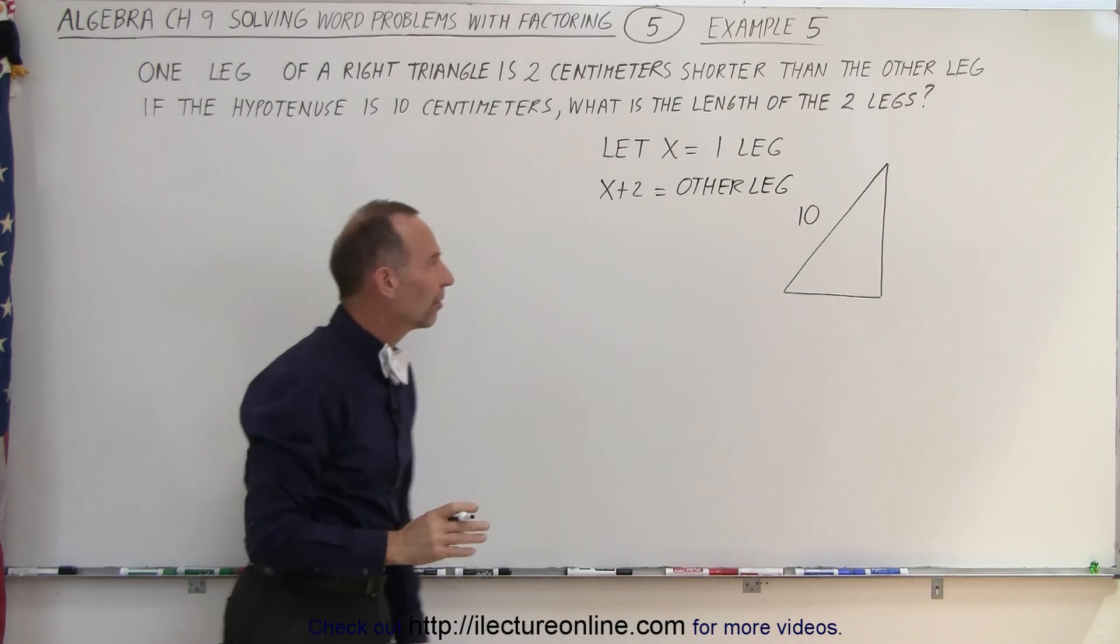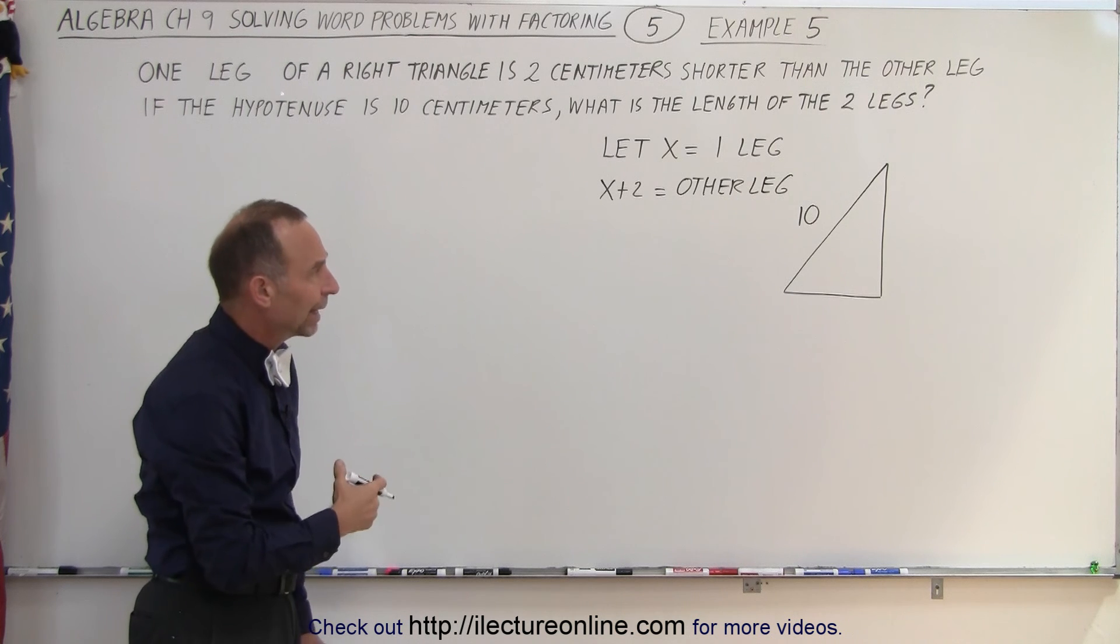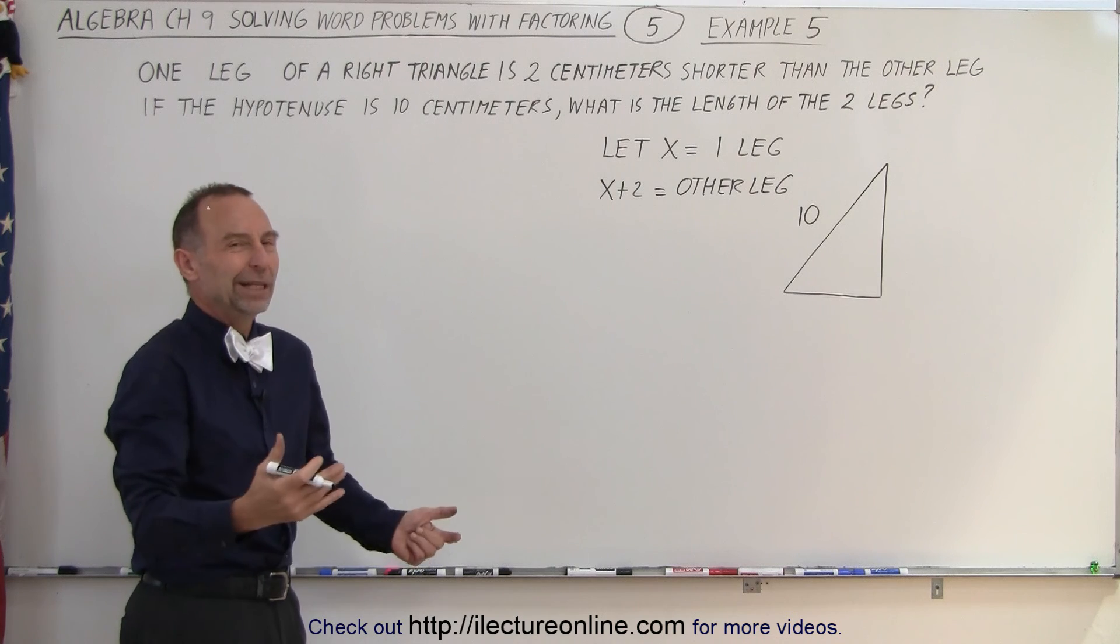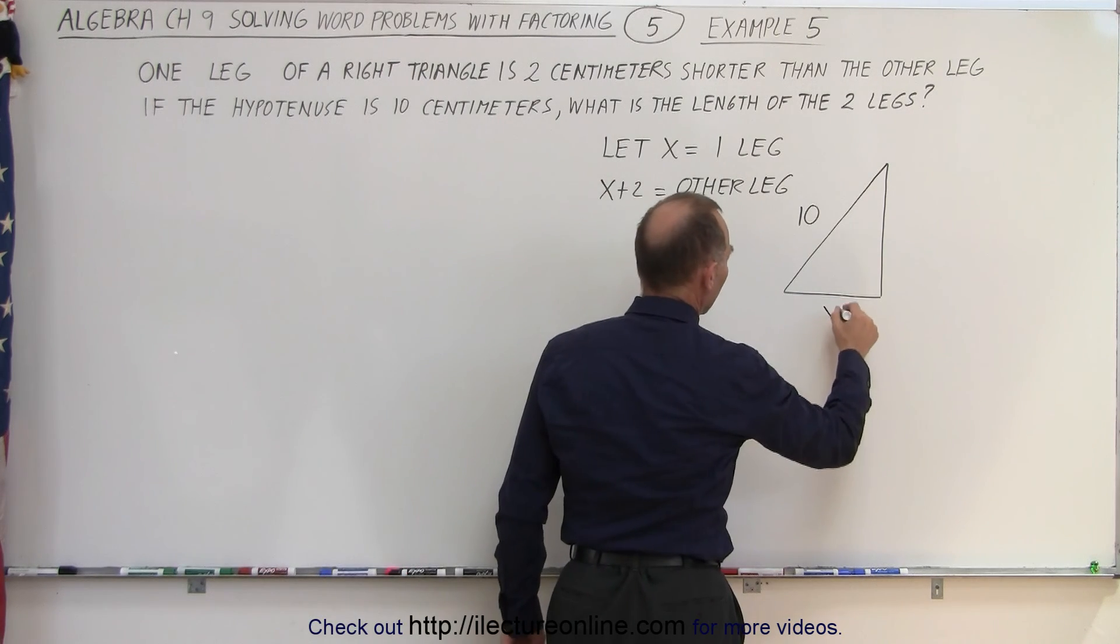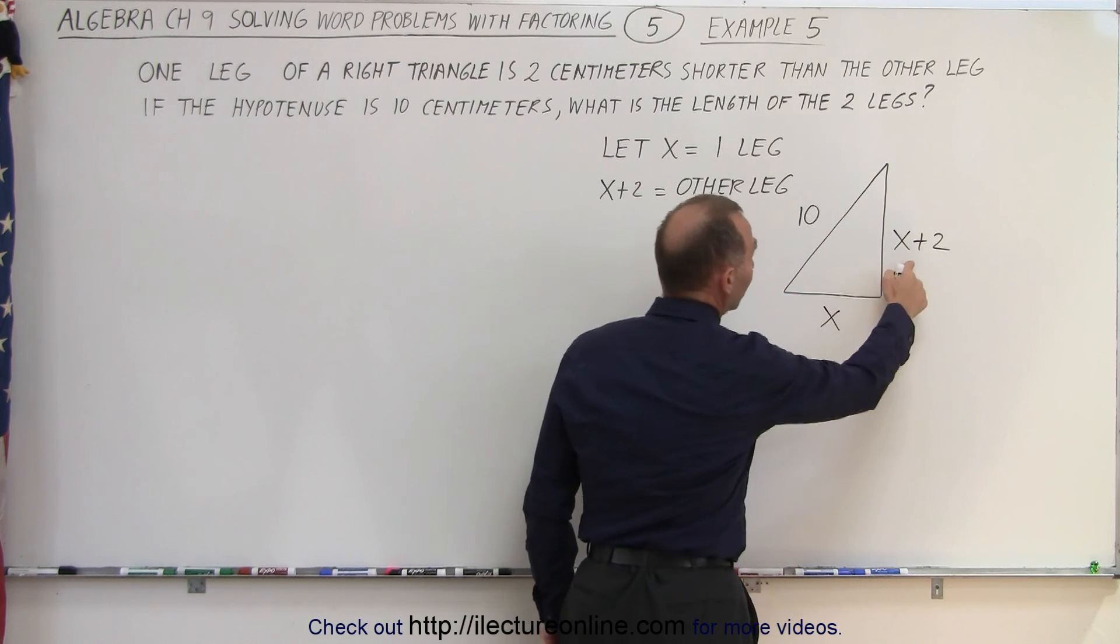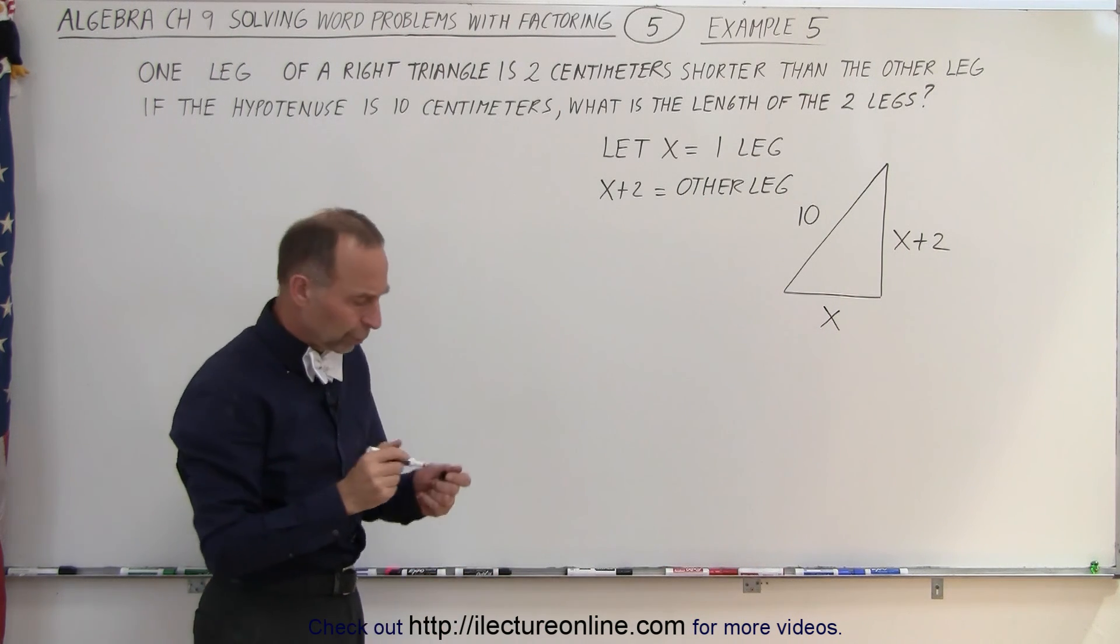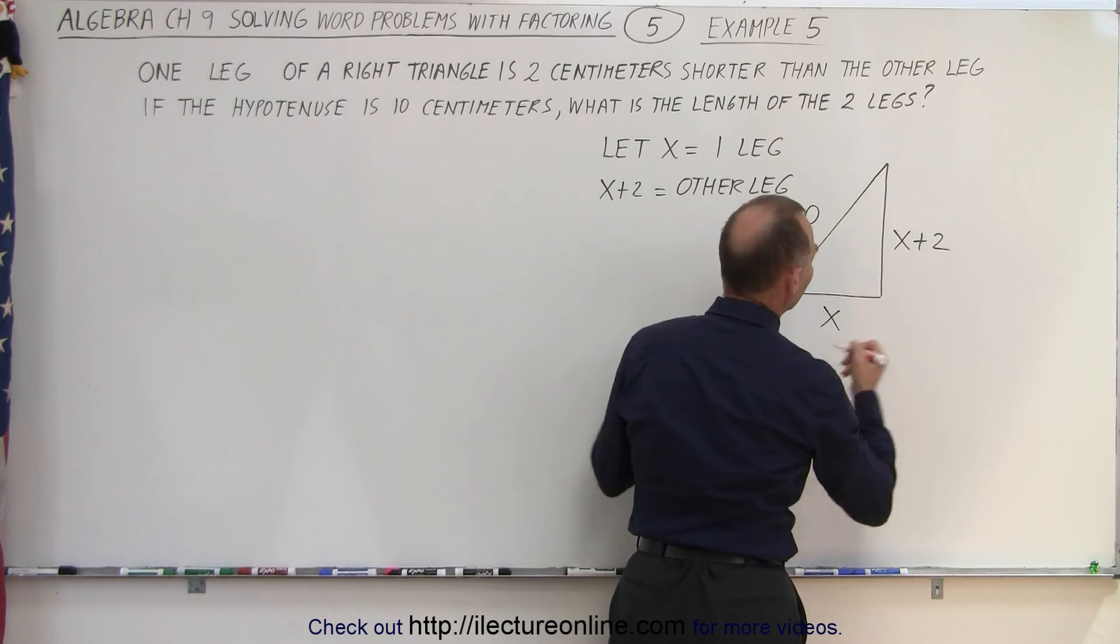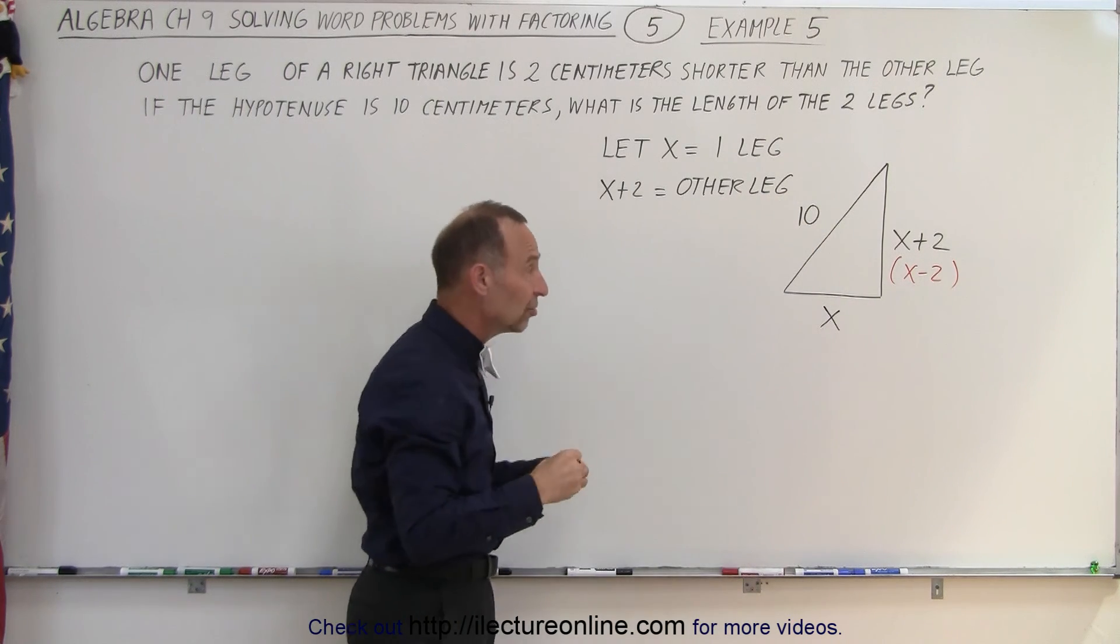Now it doesn't really matter if we let x minus two be the other leg or x plus two be the other leg. It doesn't matter because one is shorter than the other; that means the other is longer than the one. So we can call this x and we can call this x plus two. We could have called this x and this x minus two and we'll get the same result. We'll do it that way a second time, and you'll see we should get the same result each time.